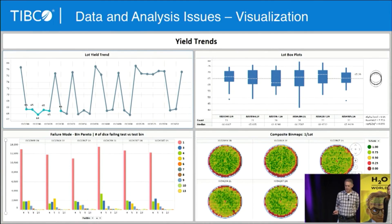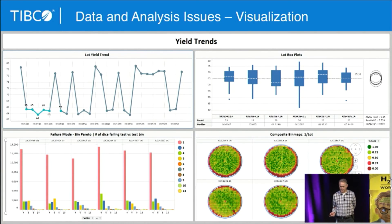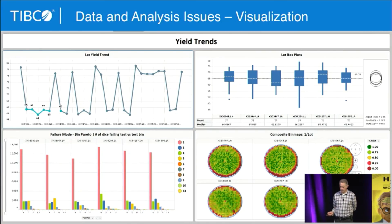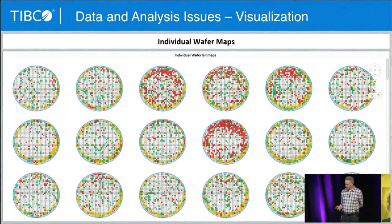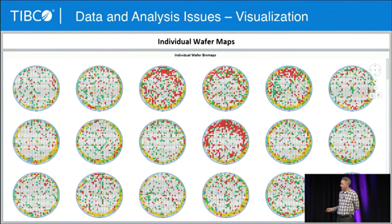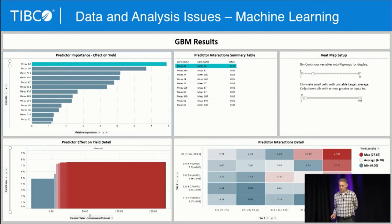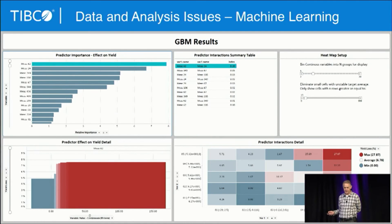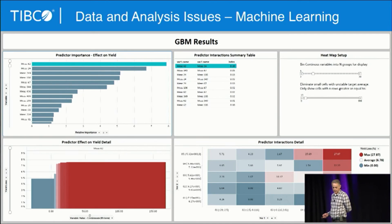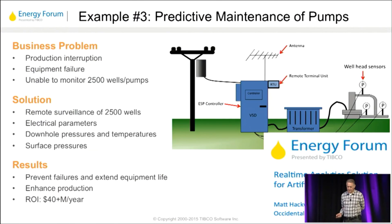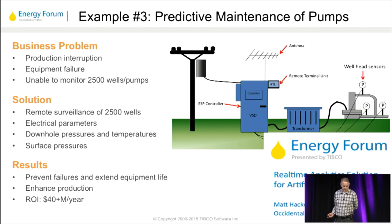We're going to jump into a couple of demos around interactive visualization on yield — in this case on the wafer map problem — to understand where the issues are, what the defect patterns look like, then fit a machine learning model. GBM is our favorite; it seems to do the job better than most. We'll then understand variable importance and interactions to figure out the factors driving the problem.